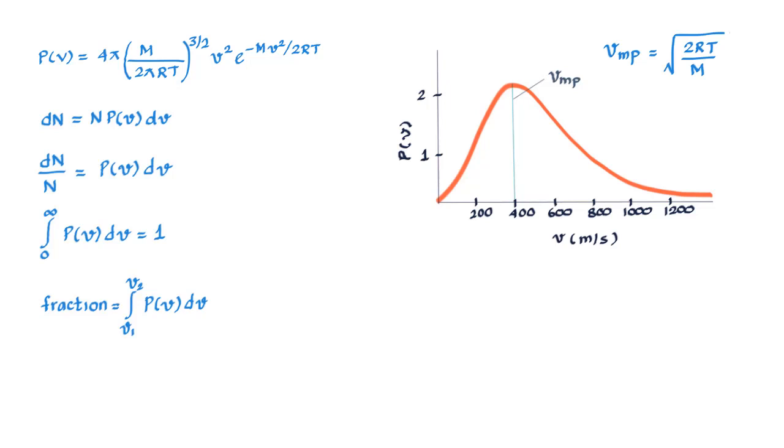So again a molecule is more likely to have speed VMP than any other speed, but some molecules will have speeds that are much more than VP and you can see that these molecules are in the tail end of the distribution curve where the velocities are very high.